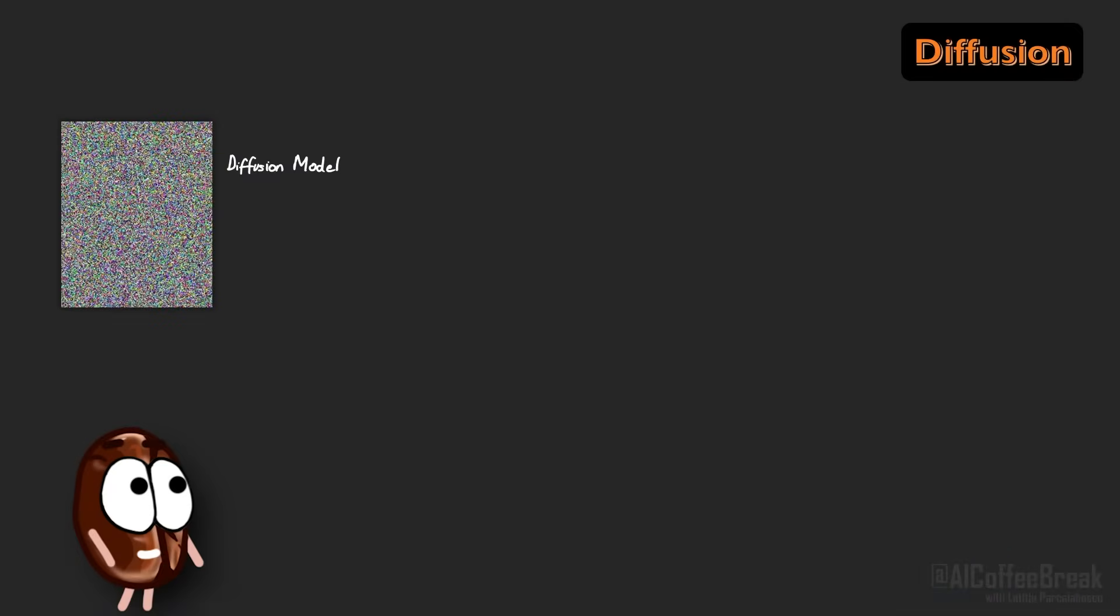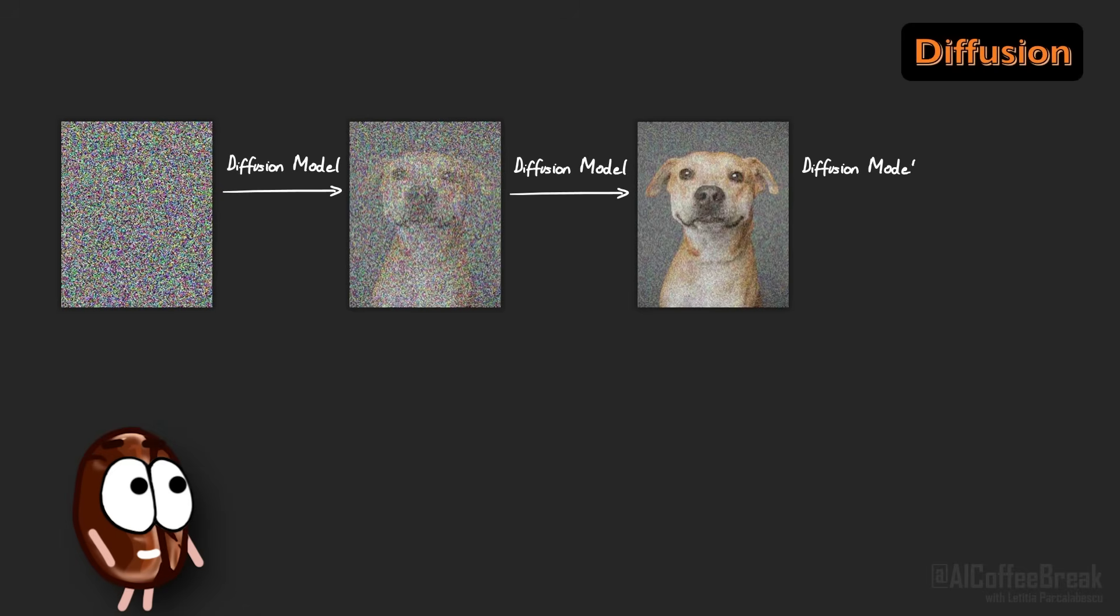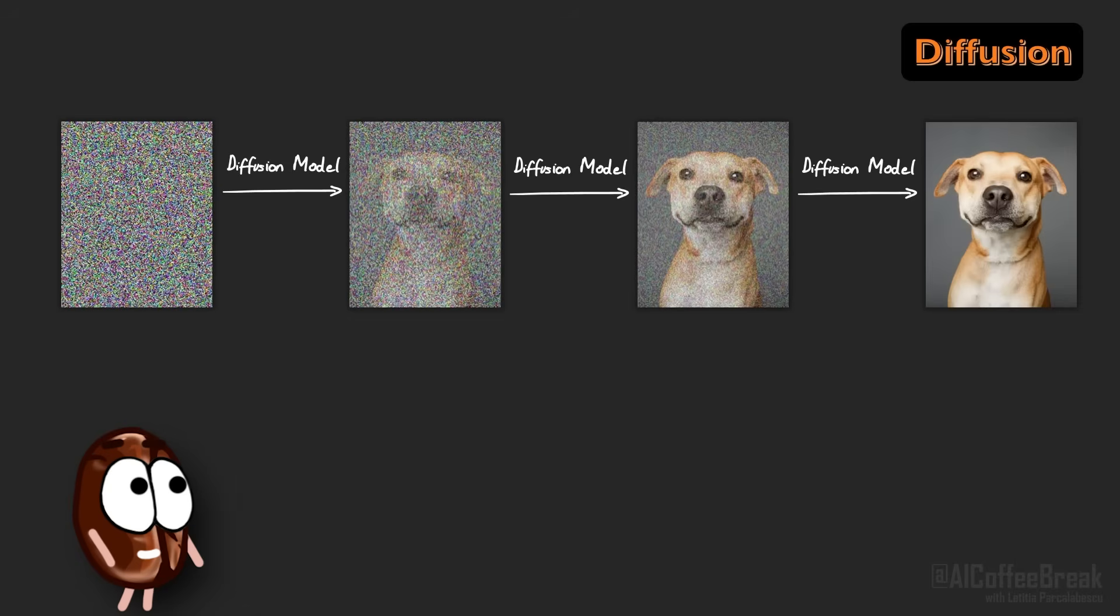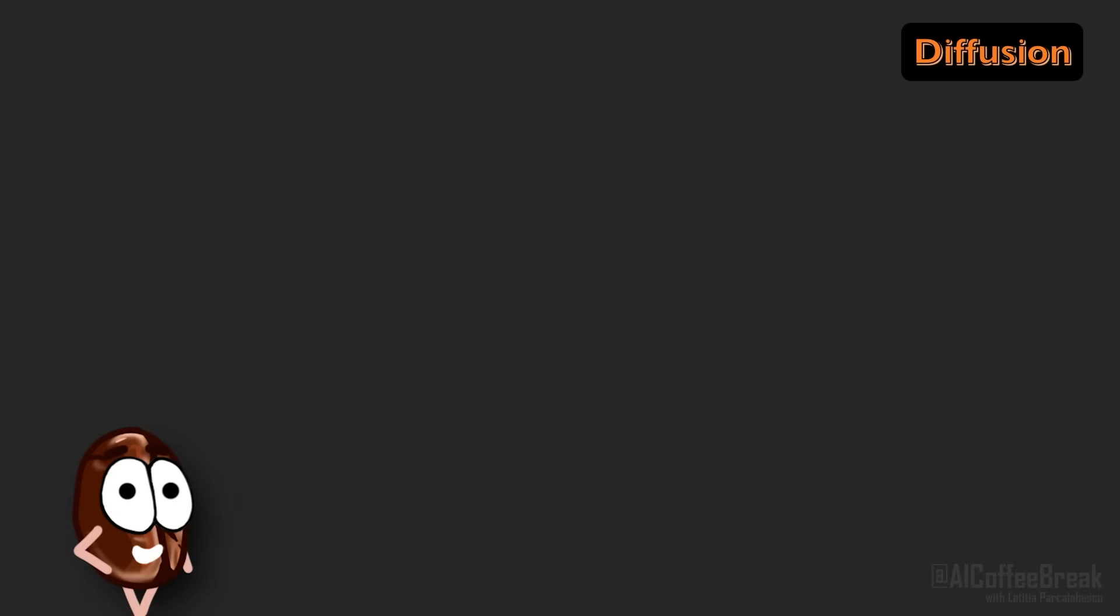Before we get to flow matching, let's see how diffusion models work. At their core, diffusion models learn to reverse noise. They get an image of pure noise as input and learn how to transform it step by step into a realistic image. But how to teach the neural network inside the diffusion model to do that? To find out, let's see what happens during diffusion model training.